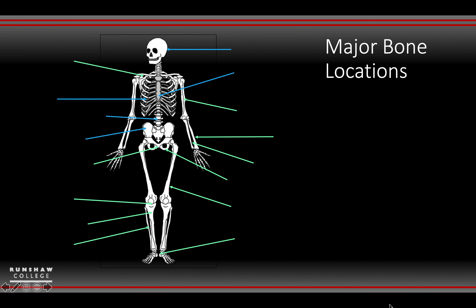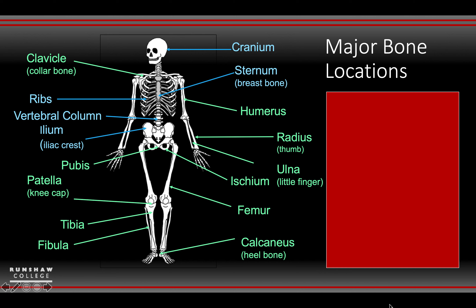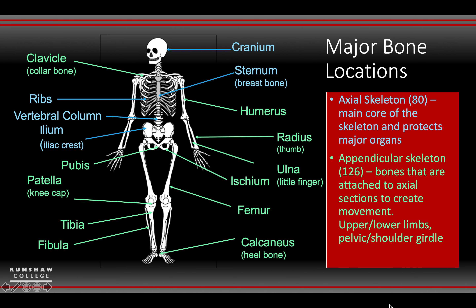Looking at major bones — we'll just whiz through this quickly because you can pause and play as you see fit to help you revise. So we've got all of them from top to bottom. You'll notice in blue are the ones related to the axial skeleton, which are the main ones covering protection of the major organs and the central core of the body — they don't give us much movement at all.